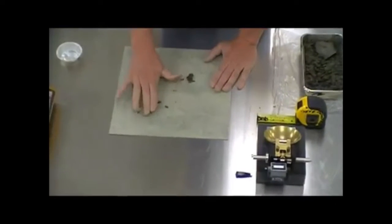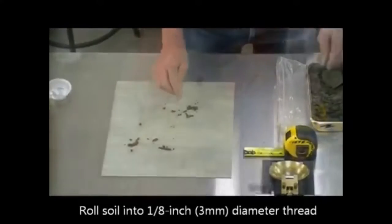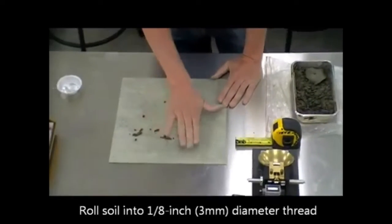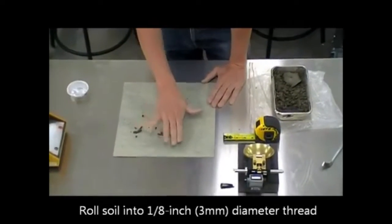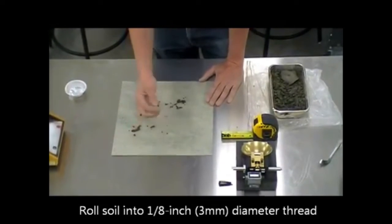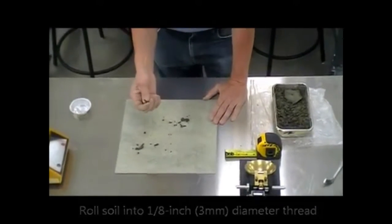If the soil is very wet, you will find that the thread can easily be longer than an inch. If the soil is too dry, it will crumble before it reaches one inch in length.